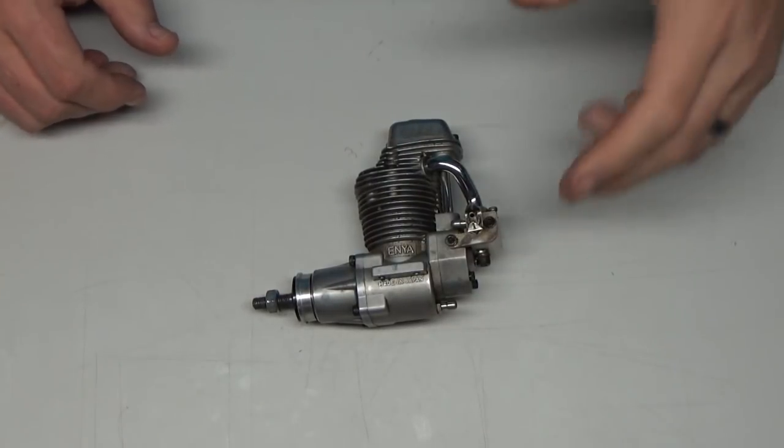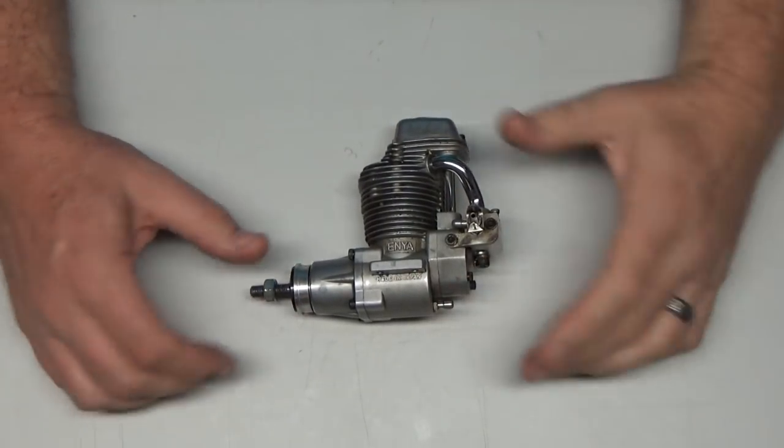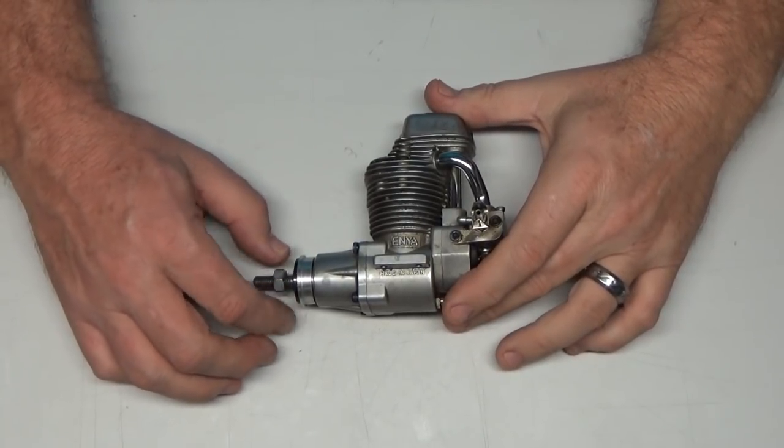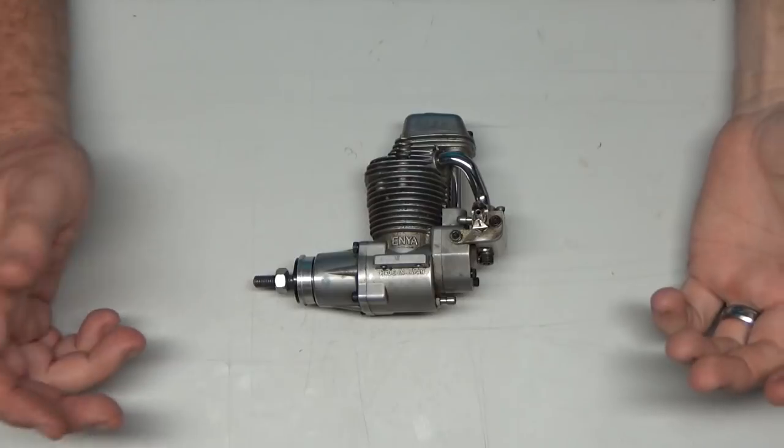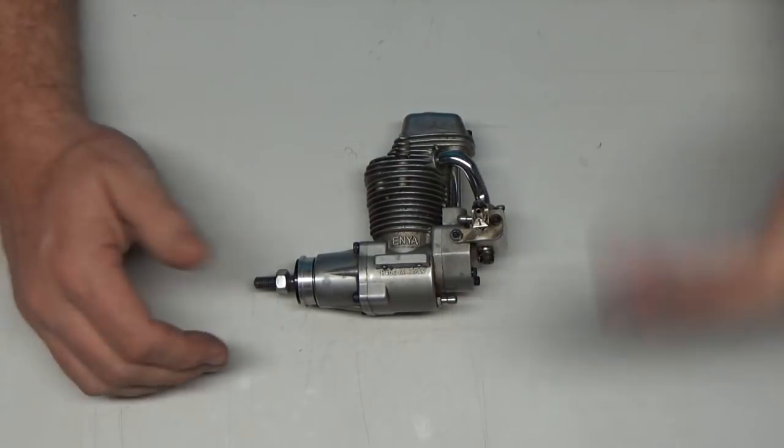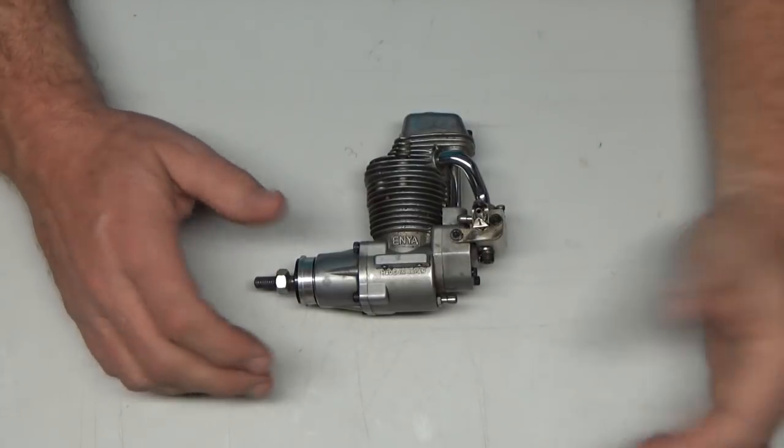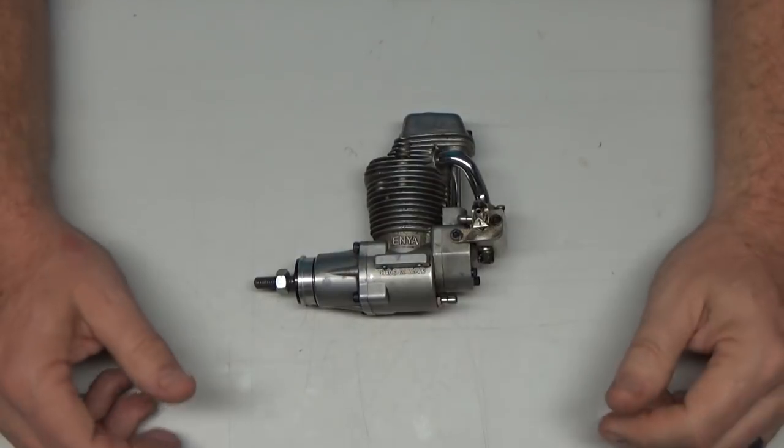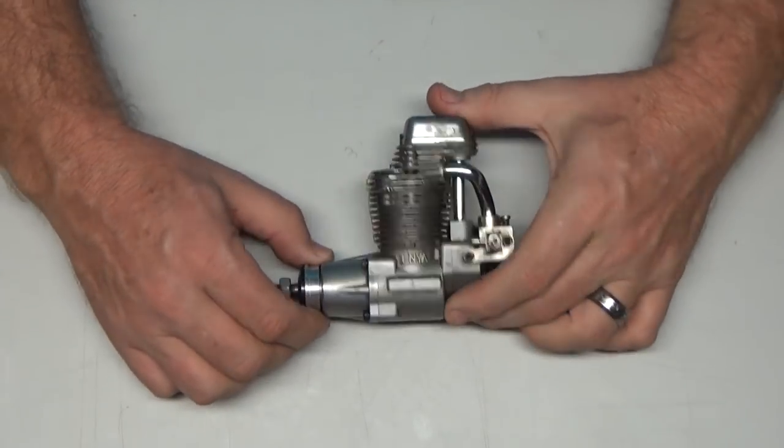Now I had an Enya 46 four-cycle engine that was brand new, actually it had about six runs on it. So I asked him to send me pictures of his, tell me a little bit about what was wrong with his engine. I said, well I'll just give you mine, give me yours. I'll take your engine and I'll just send you mine. So that's what I've done. I've packaged my engine up in the box that his came in and I'm sending it to him.